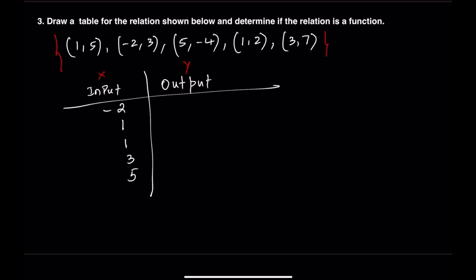In this relation, negative 2 is paired with 3, 1 is paired with 5 and 2, 3 is paired with 7, and 5 is paired with negative 4. Since the input 1 is paired with 2 and also with 4, we have one input giving different outputs. That tells us this relation is not a function.